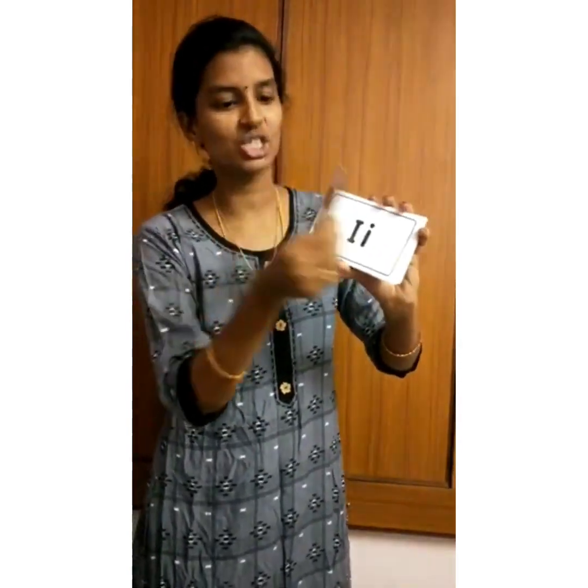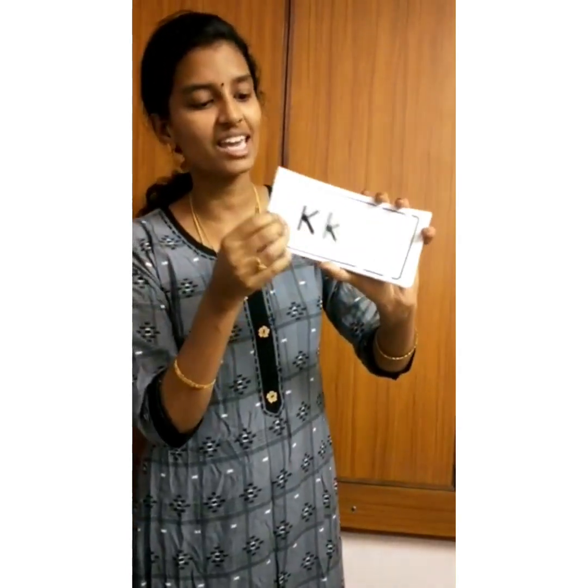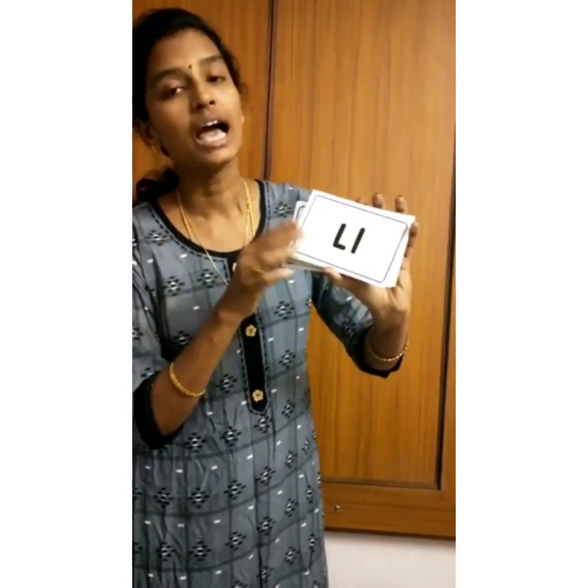H is for h-h-h-horse, h-h-h-horse. I is for e-e-e-igloo, e-e-e-igloo. J is for j-j-jad, j-j-jad. K is for c-c-c-king, c-c-c-king.